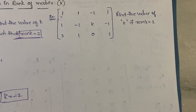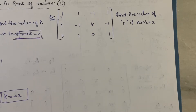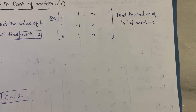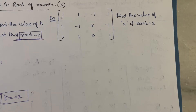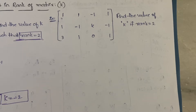Hello everyone, welcome back to my YouTube channel Trouble Free. In this video I'm going to explain one more problem about finding unknown values when the rank is given, using the echelon form. In the previous video I explained how to calculate the rank of a matrix using echelon form, and also how to find a particular element when the rank is given. Now in this video we are going to do one more problem on finding the unknown value.